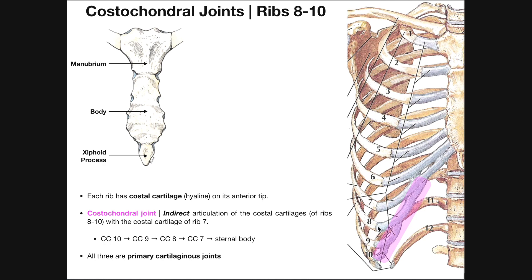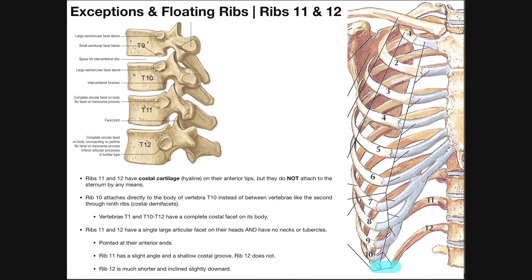That takes us from ribs one through ten. The remaining two pairs — ribs eleven and twelve — are called floating ribs. It's a bit of a misnomer because they're not completely floating like the hyoid bone; they still attach to the vertebrae posteriorly. But anteriorly they are floating — they do not articulate with the sternum either directly or indirectly via costal cartilage. Ribs eleven and twelve still have that hyaline cartilage tip, but it doesn't attach to the sternum or to any other costal cartilage. It only provides some protection to the anterior tip.